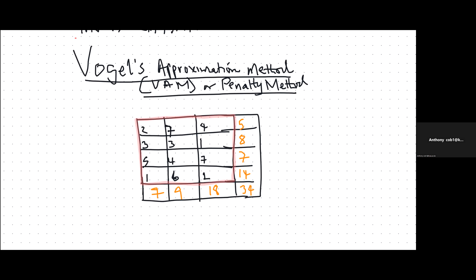We are combining the use of penalties and also the least cost method. We saw that the least cost method gives very efficient solutions, so we want to combine both. When you're given a problem, you check that it is balanced, then you compute the row penalties and column penalties.